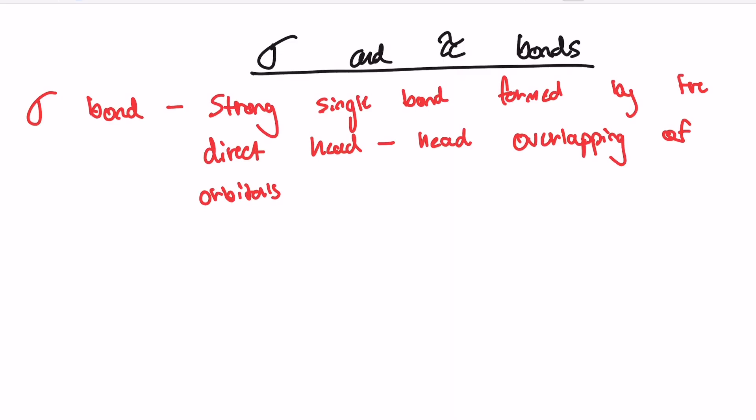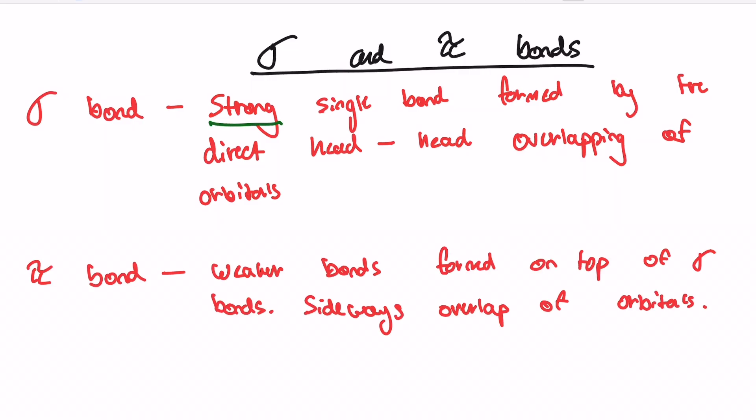The other part of hybridization we need to talk about is our sigma and pi bonds. What even are sigma and pi bonds? The actual definition of sigma and pi bonds is pretty simple. A sigma bond is a strong single bond formed by the direct head-to-head overlapping of orbitals. An emphasis on the strong. Sigma bonds are strong. Pi bonds are weaker bonds that are formed on top of this. We call these double or triple bonds, and they are formed by the sideways overlap of orbitals. Their sideways overlap formation is why pi bonds are weaker than sigma bonds.